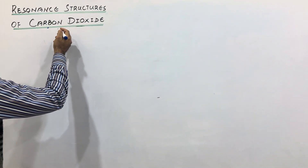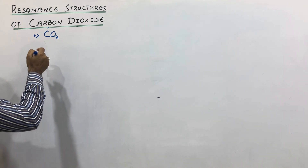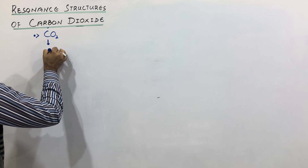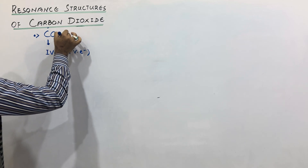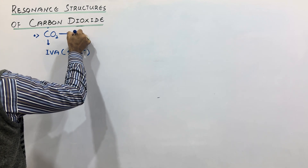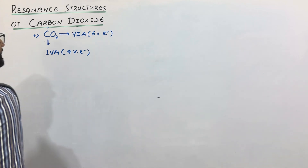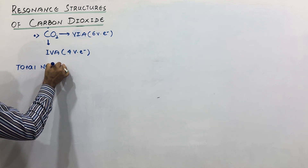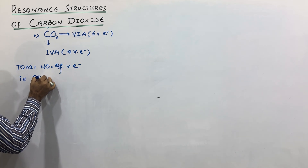Dear students, the formula of carbon dioxide is CO2, which means it has one carbon and two oxygen atoms. Now carbon belongs to group 4A, so it has four valence electrons. And oxygen belongs to group 6A, so it has six valence electrons. Now what should be the total number of valence electrons in carbon dioxide?